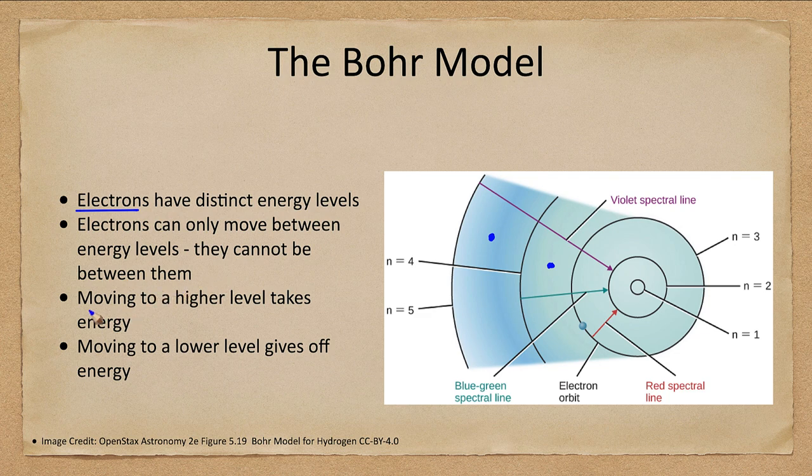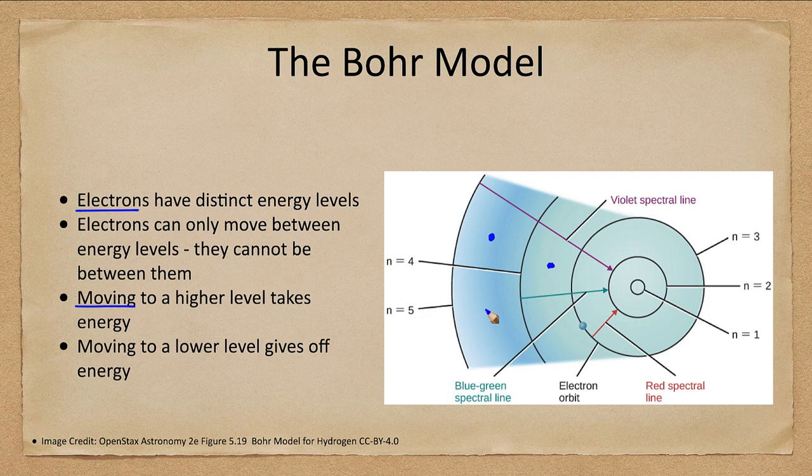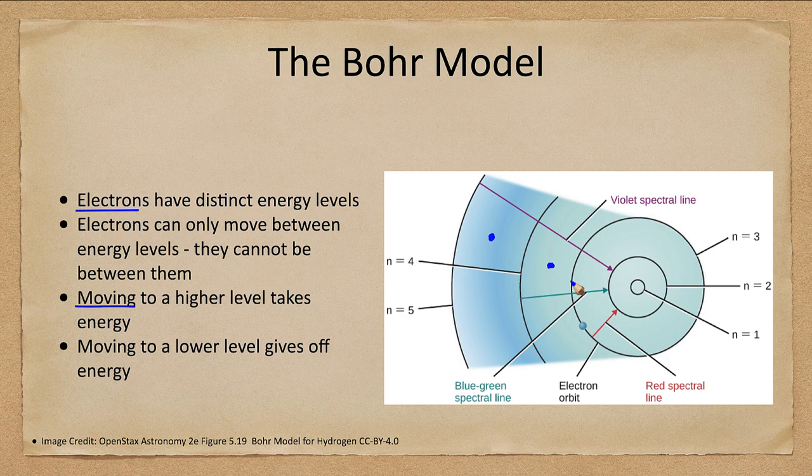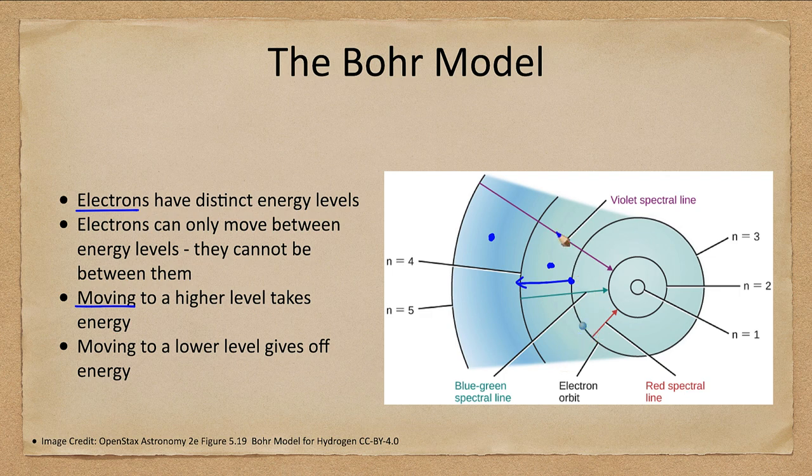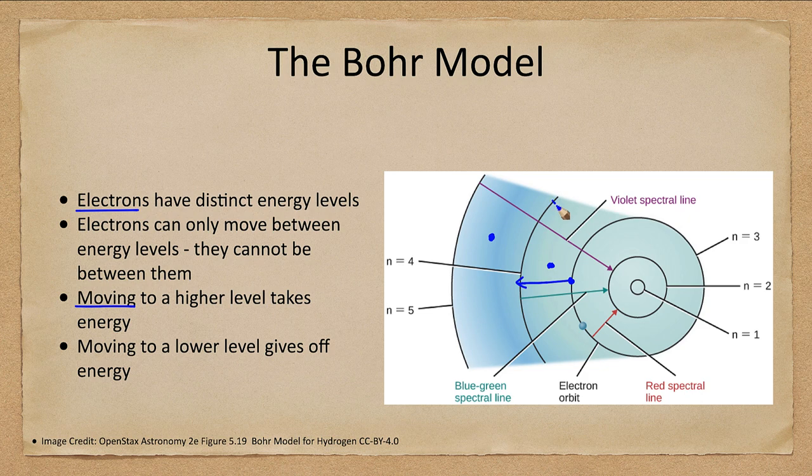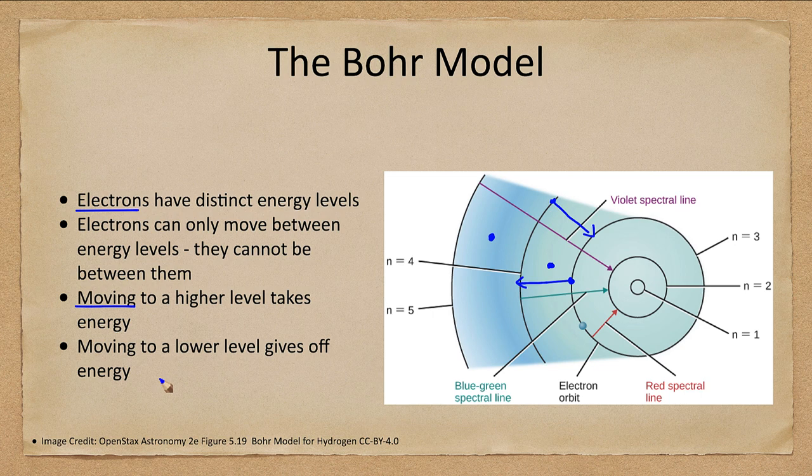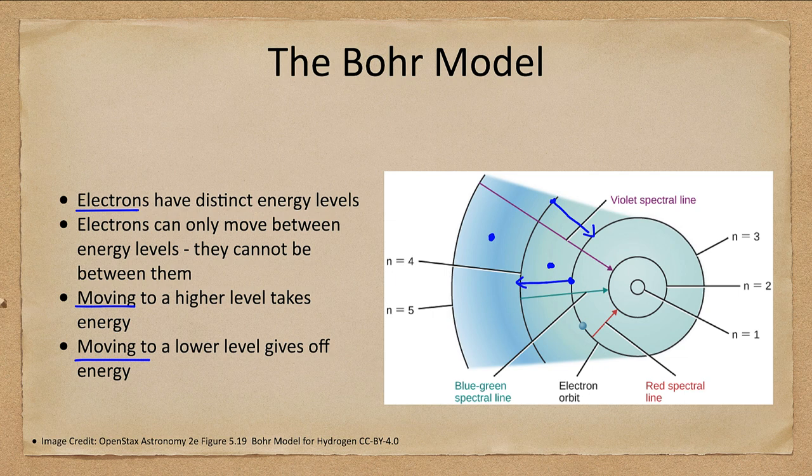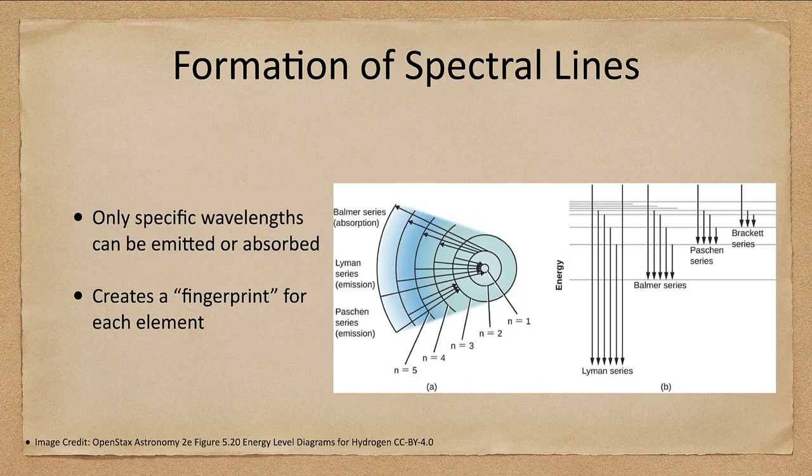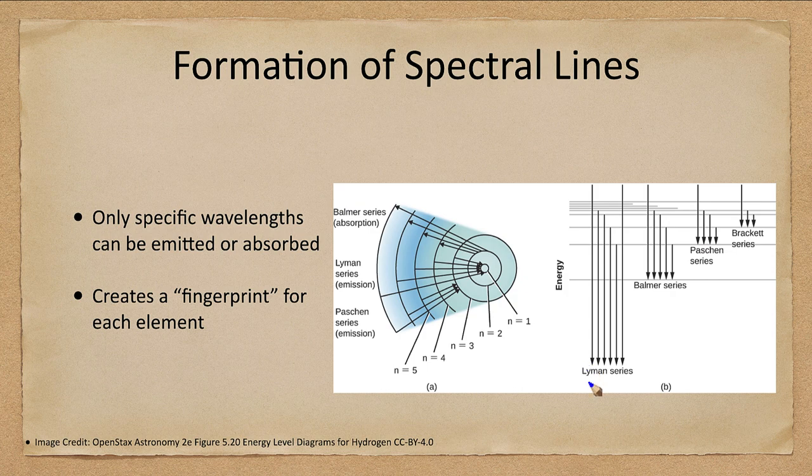Now when we look, they can change if we move them to a higher energy level. That takes energy. So if we take an electron from this level up to this level, that requires energy. It gives off energy if we go from a higher to a lower level. So moving to a higher level takes energy, moving to a lower level gives off energy. And each of those amounts of energy corresponds to a wavelength then. So what this does is means we get very specific energy levels for each of these.